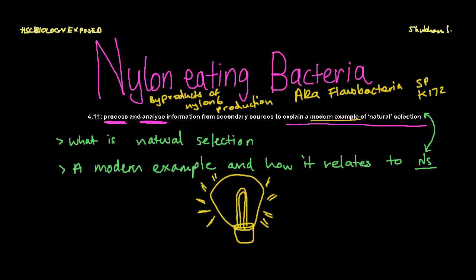Process and analyse. So when we hear that, we usually need to work with information from secondary sources or sometimes that even comes up with first-hand investigations. So we're going to be working with secondary sources. Technically, I am a secondary source, and this is doing the dot point correctly. And we have to explain a modern example of natural selection.